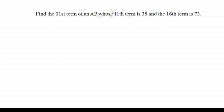The question is find the 31st term of an AP whose 11th term is 38 and 16th term is 73. Here you have to find A31, and it is given that the 11th term is 38 and your 16th term A16 is 73.